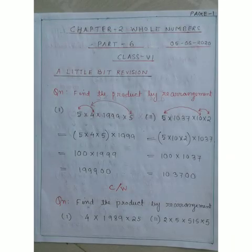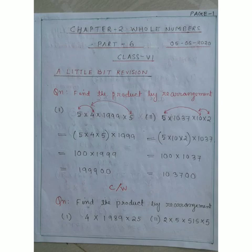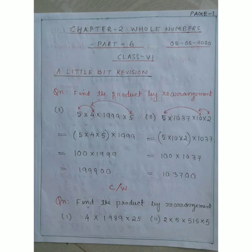Good morning, dear students. This is Part 6 of Chapter 2, Whole Numbers. Before going to the next topic, let us have a bit of revision. In Part 5, I taught you how to find the product by rearrangement of numbers. Some of you were not able to do it properly, so I thought to look at how to group the numbers so that you can do it yourself. I have given two examples and two classwork sums.